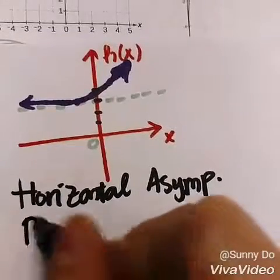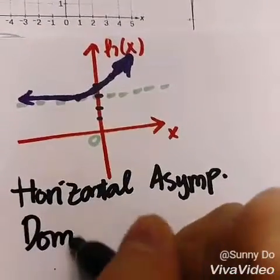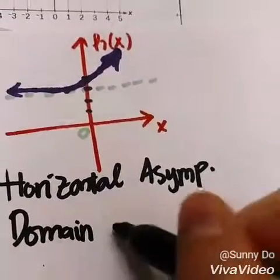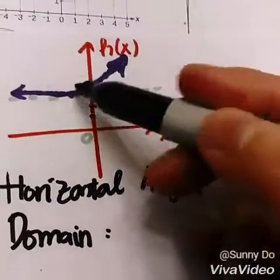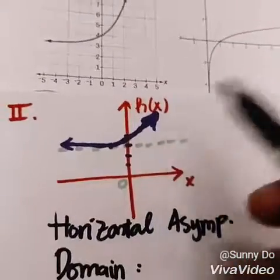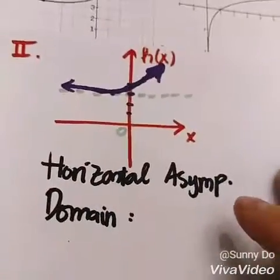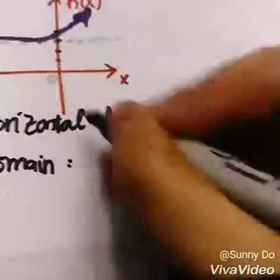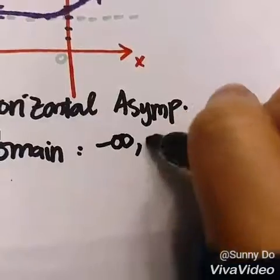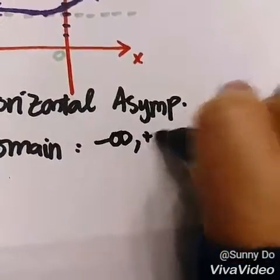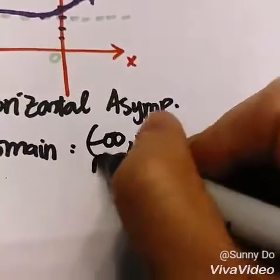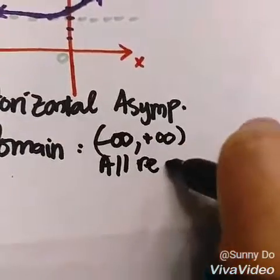For the domain, we go from the left to the right. The domain is going to go all the way left and all the way right, so it's from negative infinity to positive infinity. Another way to write it is all real numbers.